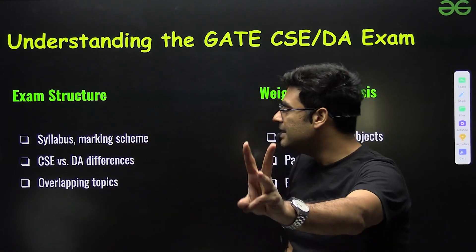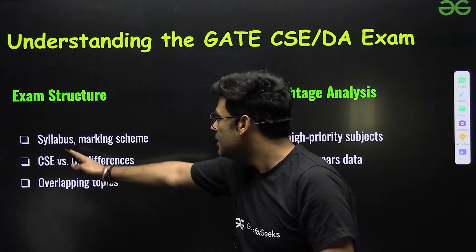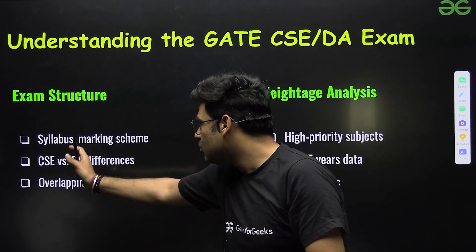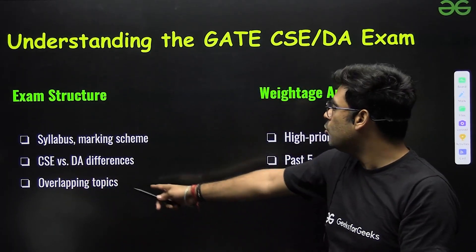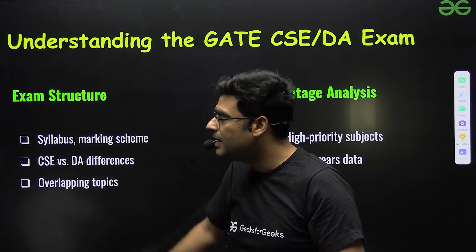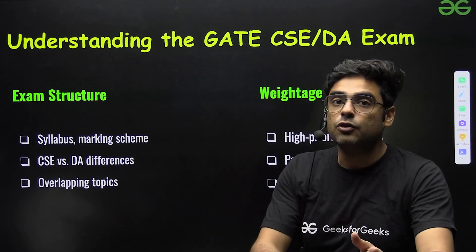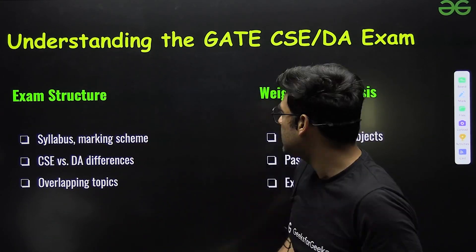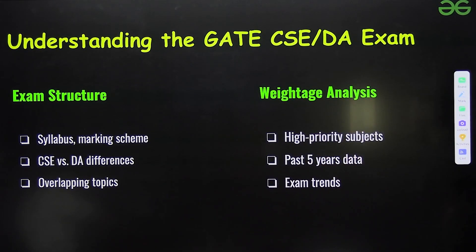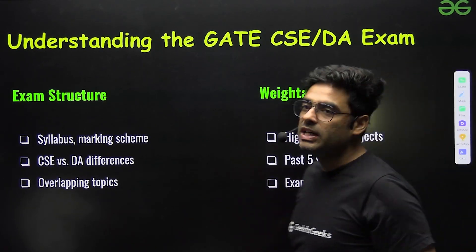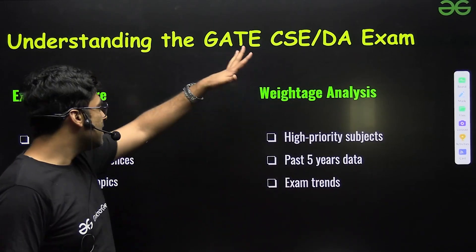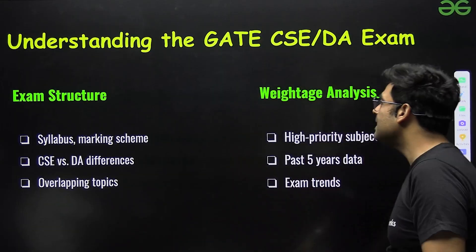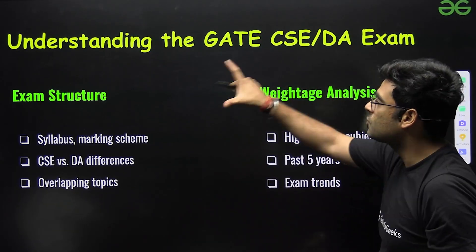In the exam structure, three things are important — these are the three pillars: firstly, syllabus and marking scheme, how these are structured for the GATE exam; then what is the difference between CSC and DA; and then overlapping topics. We have certain overlapping topics, which is an advantage if you are giving CSC, as you can also prepare for DA as well. These are really very important points before appearing for GATE.